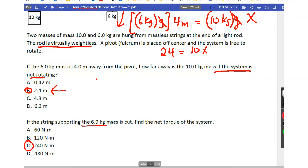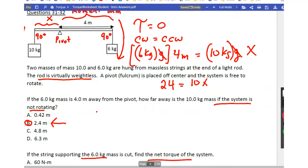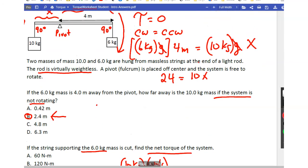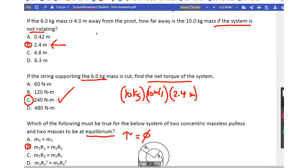If the string supporting the 6 kg mass is cut, what is the net torque? If the 6 kg is cut, the only torque is from that hanging mass. So it's 10 kg times 10 m/s² to make it a force, that's 100N. The moment arm we found is 2.4m. The angle is 90, we don't need trig, so 100 times 2.4 is 240 N·m.